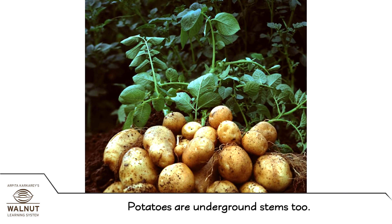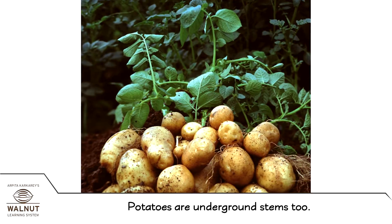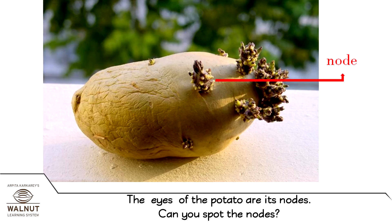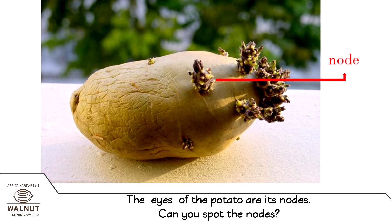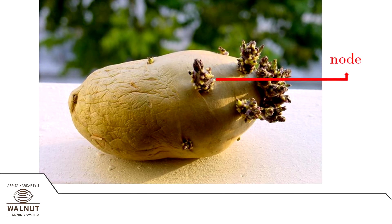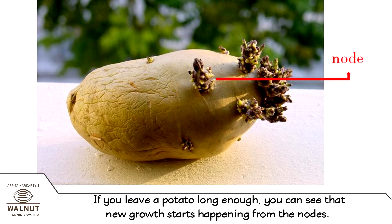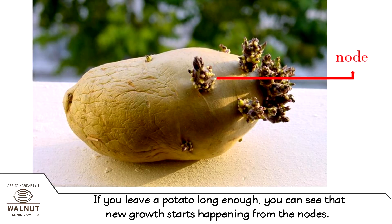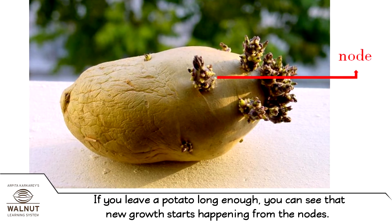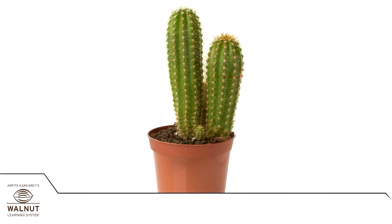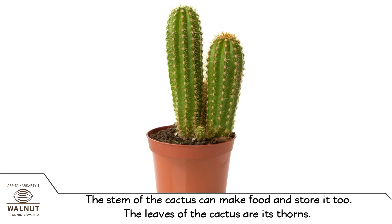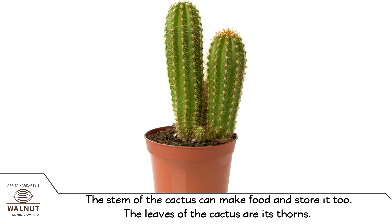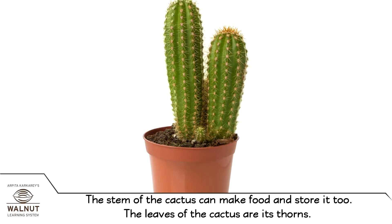Potatoes are underground stems too. The eyes of the potato are its nodes — can you spot the nodes? If you leave a potato long enough, you can see that new growth starts happening from the nodes. The stem of the cactus can make food and store it too. The leaves of the cactus are its thorns.